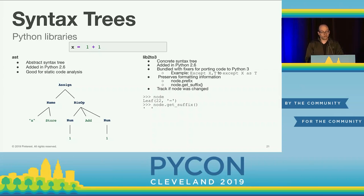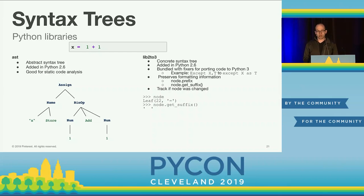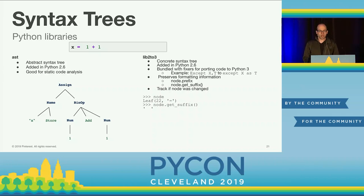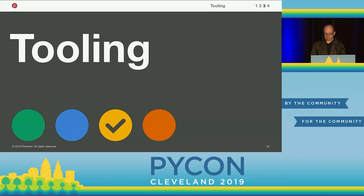As an interesting side note, there's a lot of interesting work being done in the community right now around new syntax tree libraries for Python. The Facebook booth has an interesting presentation about a new parser they're building that merges lib2to3 and AST in ways that make it easier to use. There's also work in Python 3.8 on a new parser module — a very relevant and welcoming bit of development in this space.